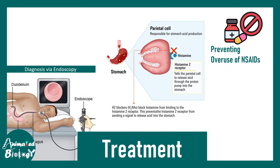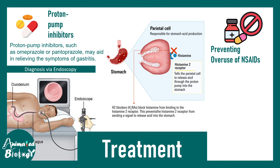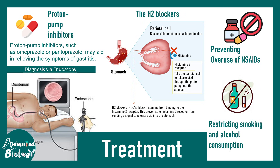Treatment of acute gastritis includes proper diagnosis, with endoscopy being the best method to locate the ulcer. Specific interventions include antihistamines and proton pump inhibitors such as omeprazole and pantoprazole, which block HCl production and provide relief. Restricting harmful agents such as smoking and alcohol is also an effective preventive measure.